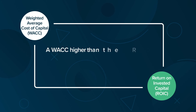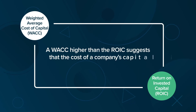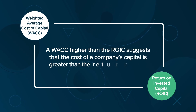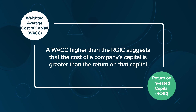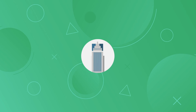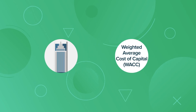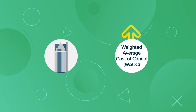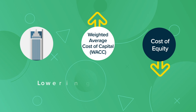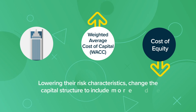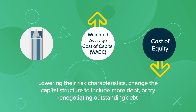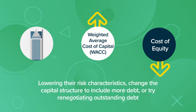A weighted average cost of capital higher than the return on invested capital suggests that the cost of a company's capital is greater than the return on that capital. If a company determines that they have a weighted average cost of capital that is too high, they may reduce the cost of equity by lowering their risk characteristics, change the capital structure to include more debt, or try renegotiating outstanding debt.